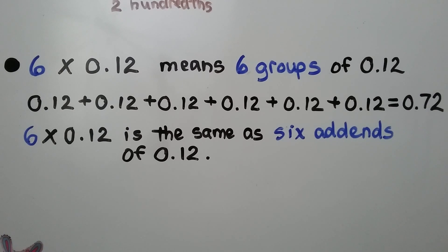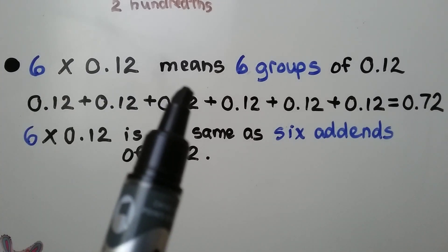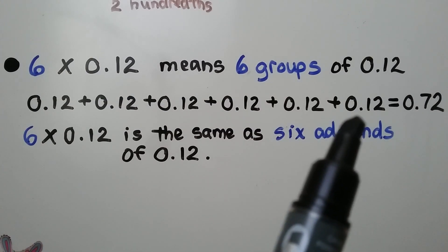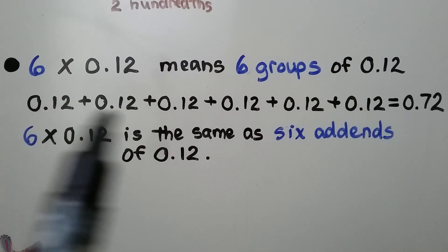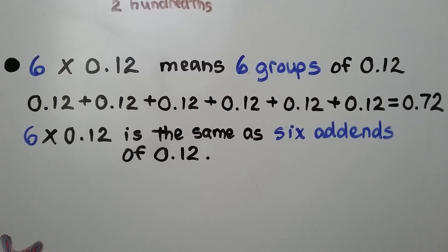Six times twelve-hundredths is seventy-two hundredths. Six times twelve-hundredths means six groups of twelve-hundredths — we could even do repeated addition. We have twelve-hundredths six times, which is equal to seventy-two hundredths. So six times twelve-hundredths is the same as six instances of twelve-hundredths added together.